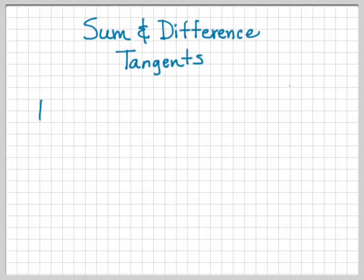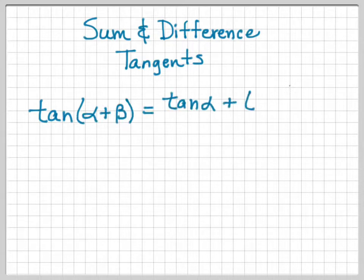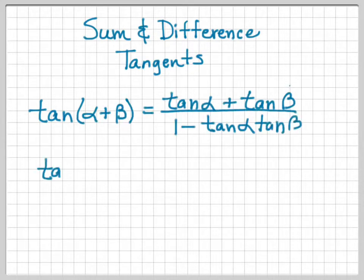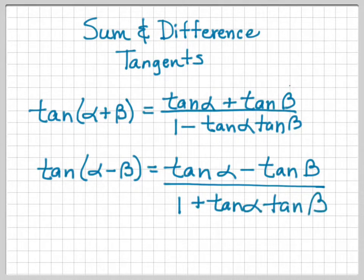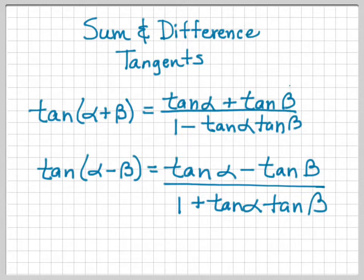Now for sum and difference of tangents. Here's another formula you need to memorize: tangent of (α+β) is (tangent alpha plus tangent beta) over (1 minus tangent alpha tangent beta). And tangent of (α−β) is (tangent alpha minus tangent beta) over (1 plus tangent alpha tangent beta). Notice: if you have a plus, you have a plus in the numerator and a minus in the denominator. If you have a minus, you have a minus in the numerator and a plus in the denominator.